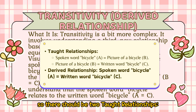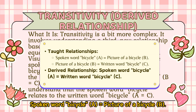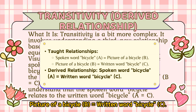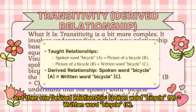So there should be two taught relationships: spoken word 'bicycle' (A) equals picture of a bicycle (B), and picture of a bicycle (B) equals written word 'bicycle' (C). And then one derived relationship: spoken word 'bicycle' (A) equals written word 'bicycle' (C).